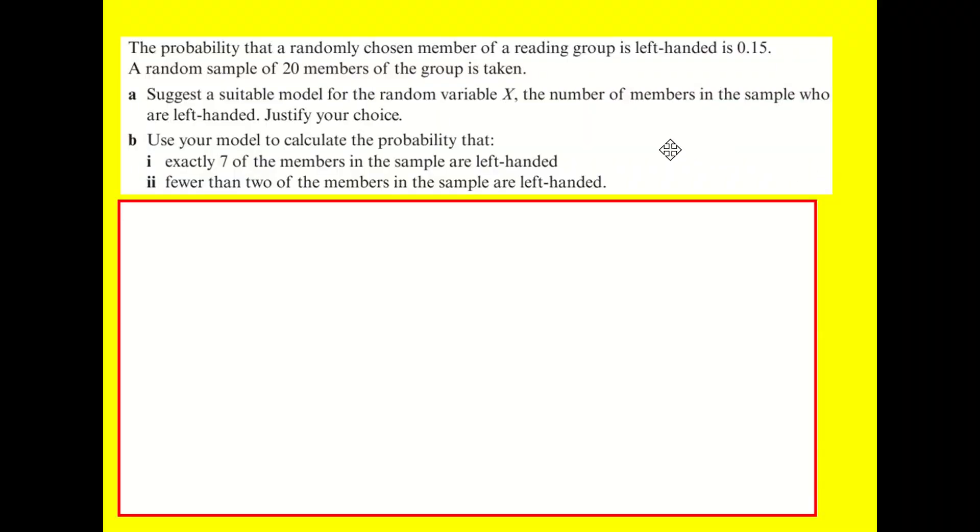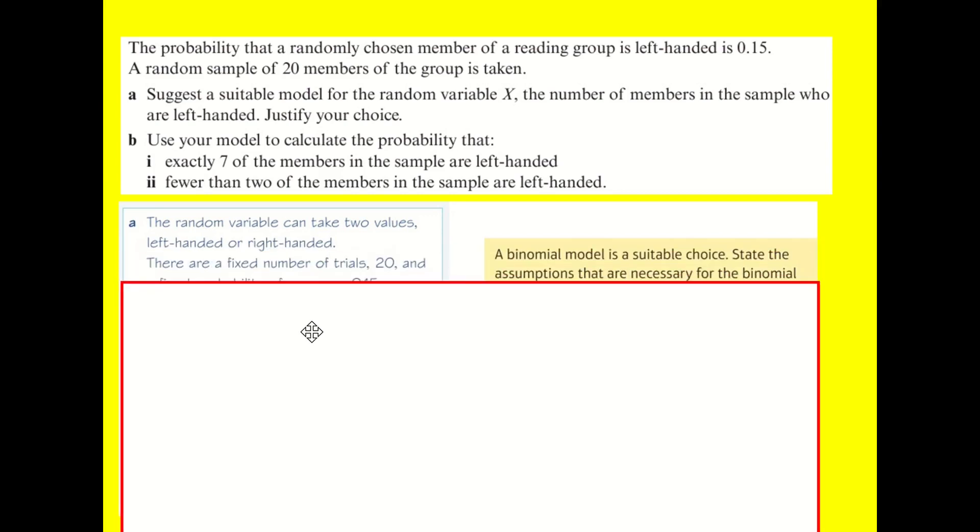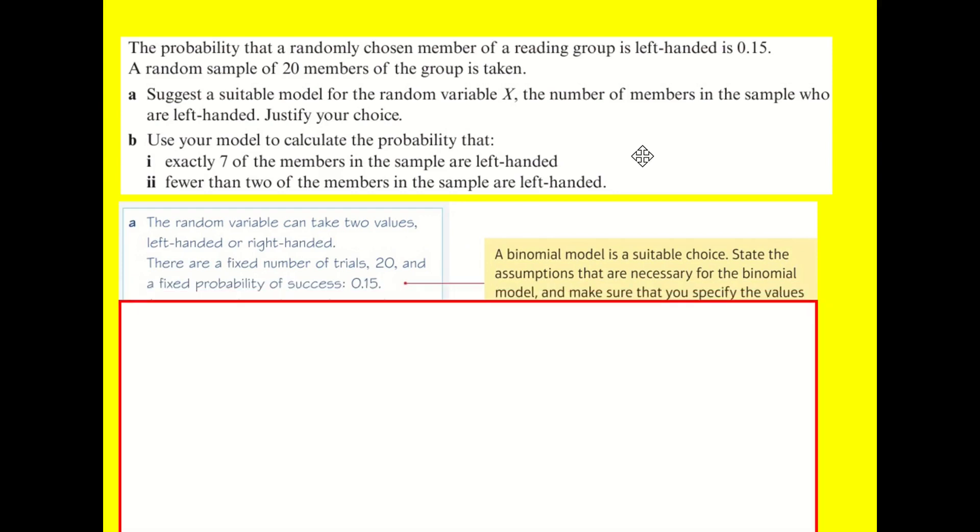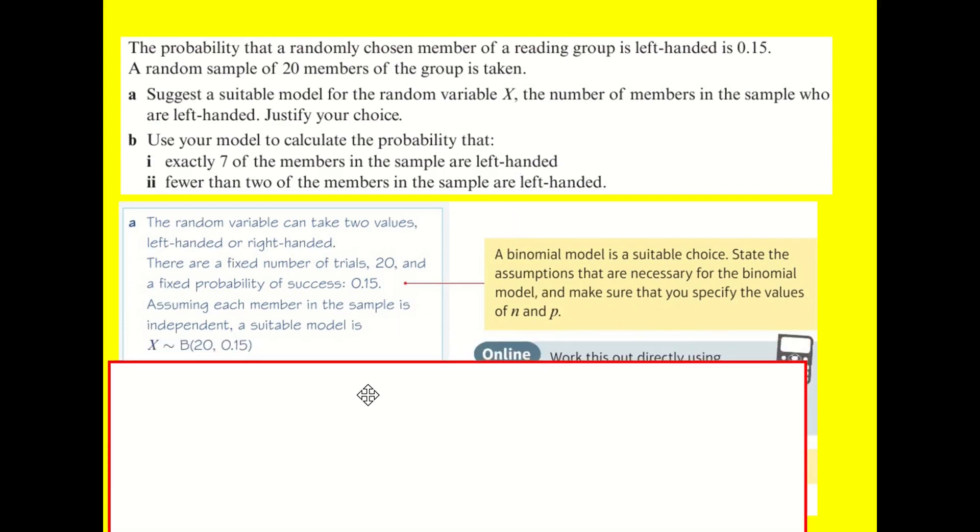Let's look at an example that combines what we did last lesson with this lesson. Have a go. Pause the video and have a go at this question. So we're being asked about X, the number of members in the sample who are left-handed. What kind of model would it be? Well, guess what? The random variable can take two values, left-handed or right-handed. There are a fixed number of trials, 20, and a fixed probability of success, 0.15. So assuming each member in the sample is independent, and we have to assume that, we don't know for sure, then a suitable model is a binomial distribution. Note what we actually know is true or we're told is true, and then we have to make this assumption about independence. Good practice is to basically try and talk about all three, just a good shout to try and justify it and make you think whether it's valid or not.